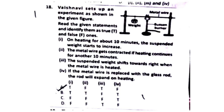Question 18: An experiment is set up. On heating for about 10 minutes, the suspended weight changes. The metal wire gets contracted with continued heating. The suspended weight shifts direction when the metal wire is heated. Fourth: the metal wire is replaced with a glass rod, which will expand on heating.